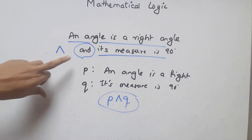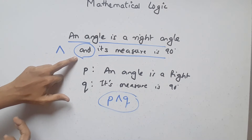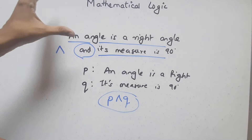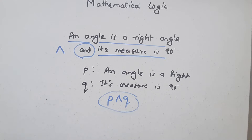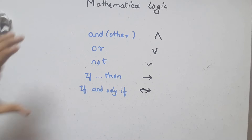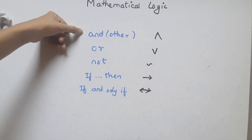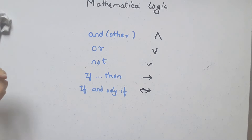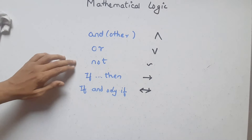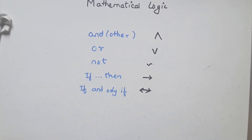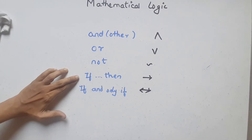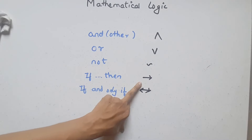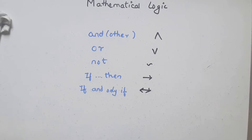There are different things that join two statements together. We have seen AND. Now let me show you all five connectives. AND is denoted by the conjunction symbol (∧). OR is denoted by the disjunction symbol (∨). NOT, which is negation, is denoted by the negation symbol (~). Then we have IF-THEN, which is denoted by the conditional symbol (→). And the last is IF AND ONLY IF, which is denoted by the biconditional symbol (↔).